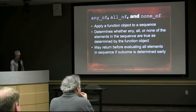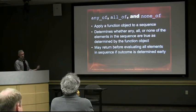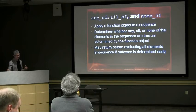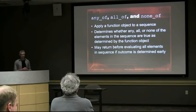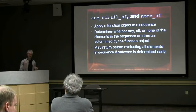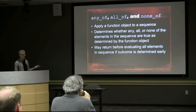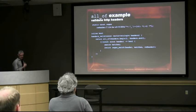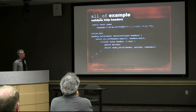How about some other algorithms? any_of, all_of, none_of can be pretty handy. Just like many other algorithms, they apply a function object to each item in a sequence and determine whether any, all, or none of the elements are true. Because these can figure out the answer before going through every item, sometimes they can exit early — they don't have to iterate over everything if the answer has already been determined.